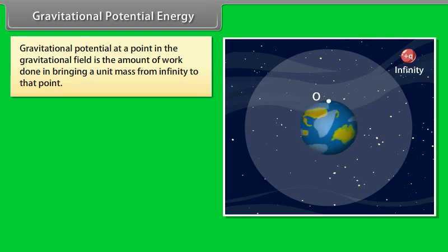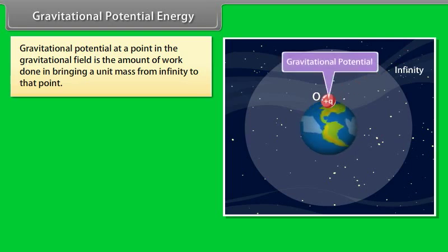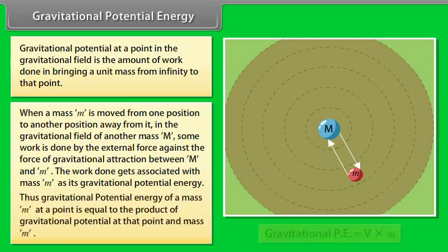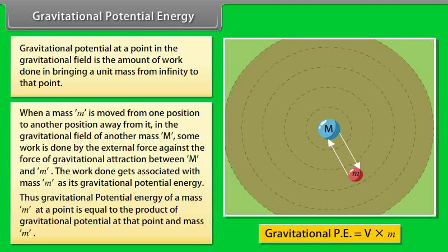Gravitational potential energy. Gravitational potential at a point in the gravitational field is the amount of work done in bringing a unit mass from infinity to that point. When a mass m is moved from one position to another position away from it in the gravitational field of another mass m, some work is done by the external force against the force of gravitational attraction between m and m. The work done gets associated with mass m as its gravitational potential energy. Thus gravitational potential energy of a mass m at a point is equal to the product of gravitational potential at that point and mass m.